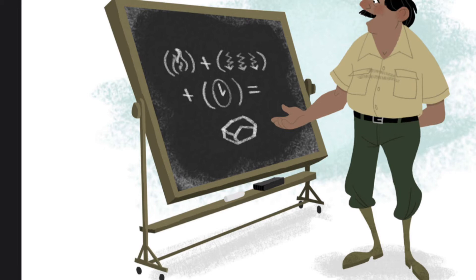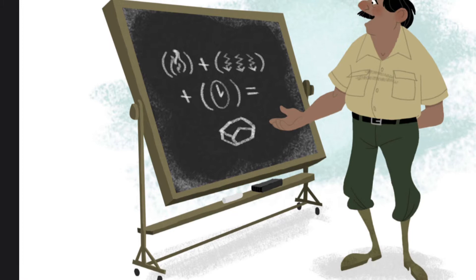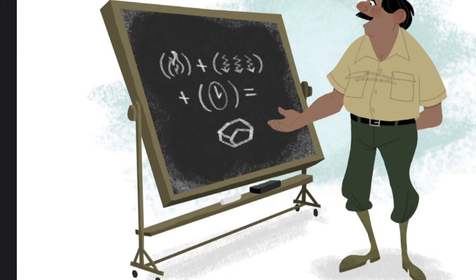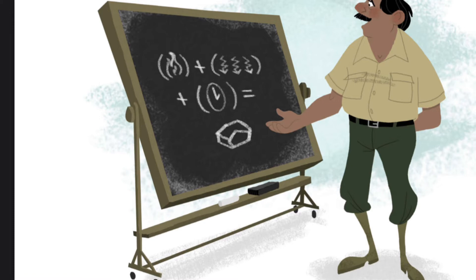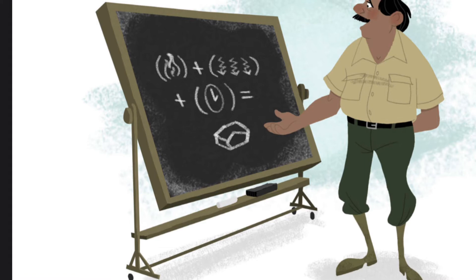Working together, heat, pressure, and time create the three types of rocks that exist in the world. Every rock in the world can be placed into one of three categories. The three types of rocks are igneous, sedimentary, and metamorphic. Try saying each of these rock types out loud.